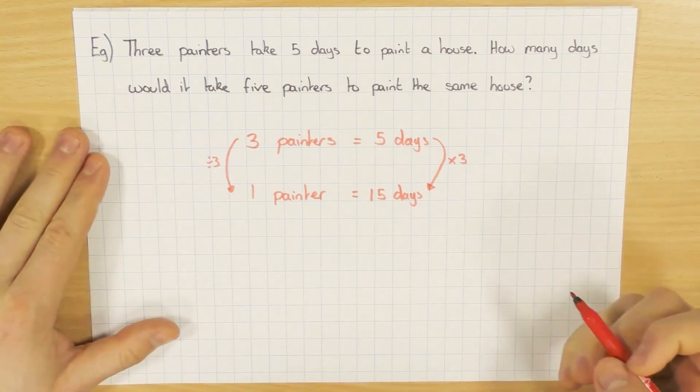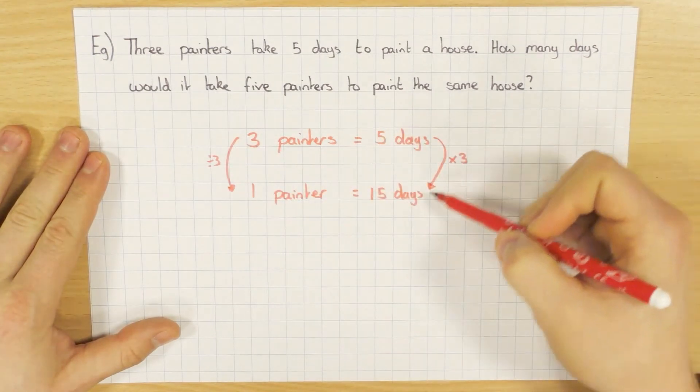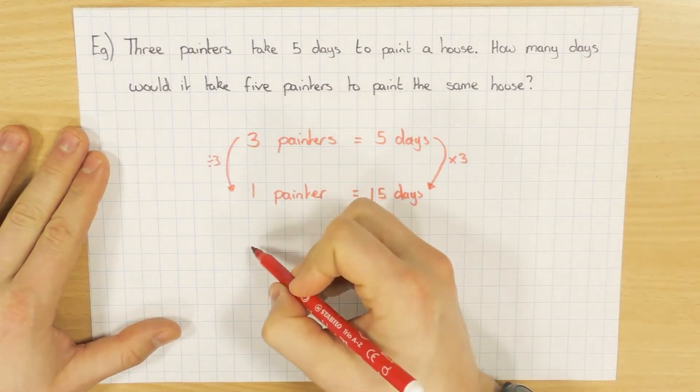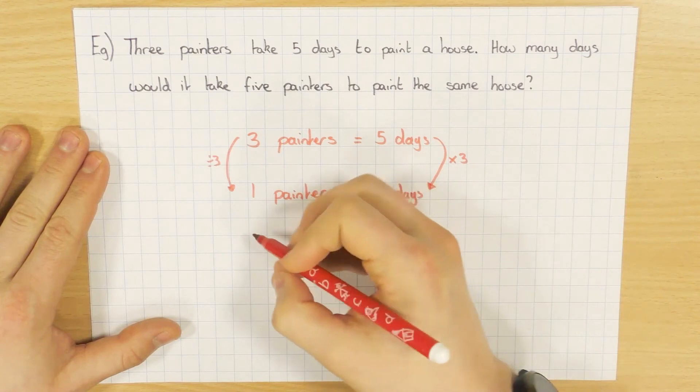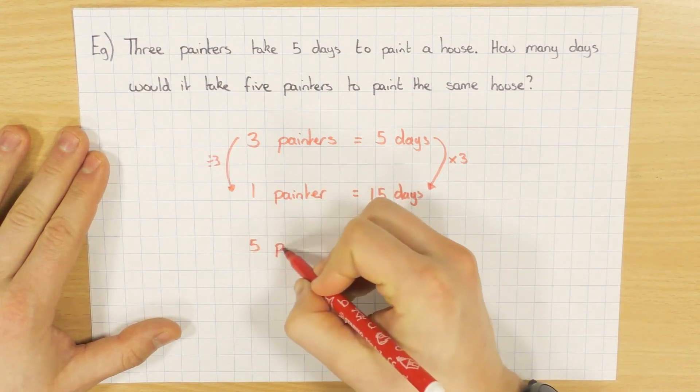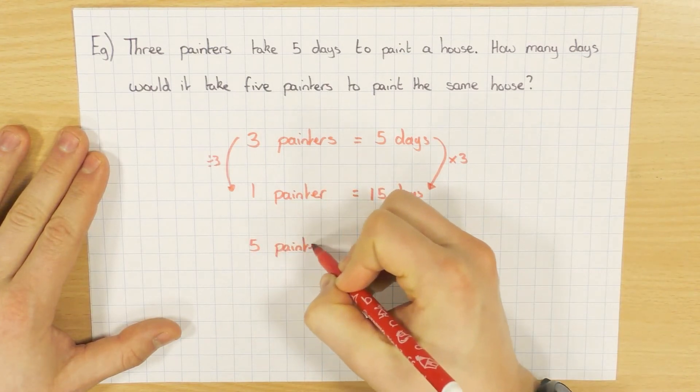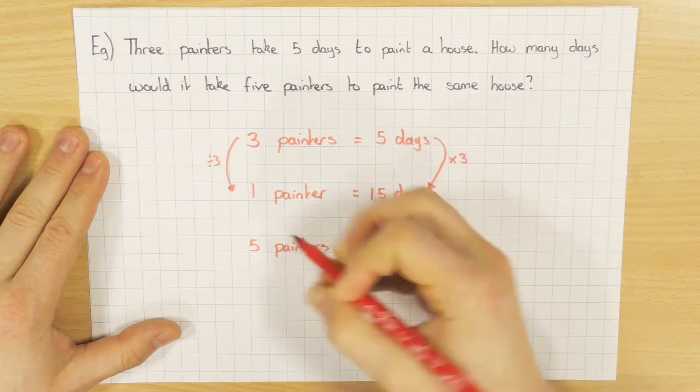So it's that idea of inverse proportion. As one thing decreases, the other thing increases. And we want to know how long it would take five painters. So here we go, five painters.